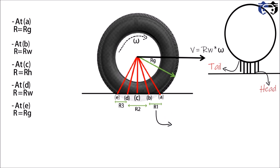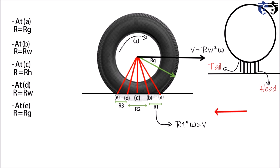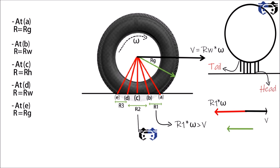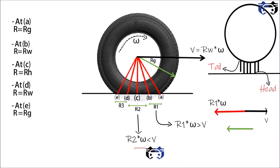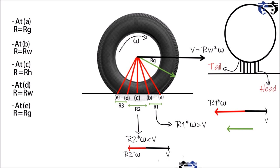In section a to b, r1 times omega (the tangential velocity) is greater than the forward velocity v, so the head will stretch towards the left compared to the tail. In section b to d, the forward velocity v is greater than r2 times omega, so the tail will try to stretch towards the right compared to the head.